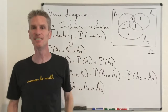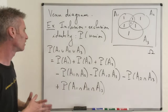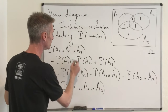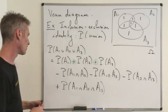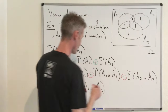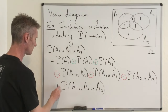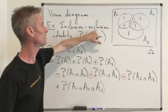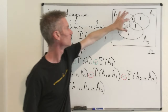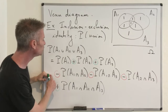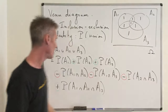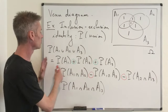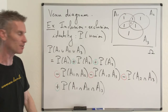This identity works for three events, and there's a general formula for n events. You notice the pattern: you start by adding the individual probabilities (plus), then subtract probabilities of pairwise intersections (minus), then add probabilities of triple intersections (plus), and so on, alternating signs. That explains the name: inclusion-exclusion — at step one you include the events, then exclude the pairwise intersections, then include the triple intersections, and so on. For n events, this generalizes naturally with terms alternating plus, minus, plus, minus.